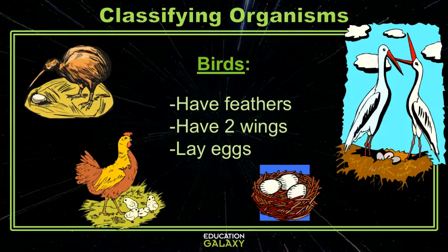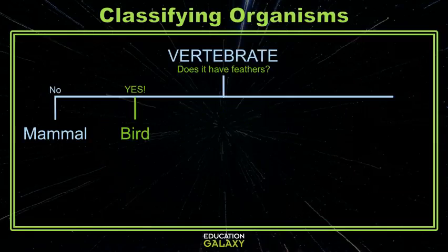Another class of animals is birds. Any animal that has feathers is automatically a bird. But all birds also have two wings and lay eggs.